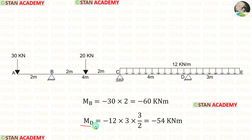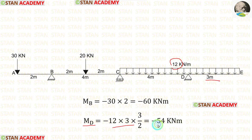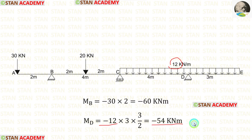We can also calculate MD because after point D there is overhanging. To calculate MD, we have to find the moment due to the UDL. This UDL is acting for the full distance in the overhanging, which is 3 meters. When we multiply the UDL with the distance and distance upon 2, we get MD. Here also, we must add a negative sign with the load to get a negative moment. Since we have calculated the moments at points B and D, there is no need to consider the overhanging spans anymore.